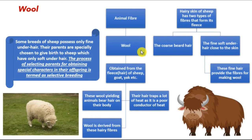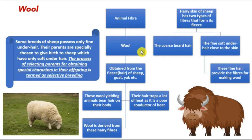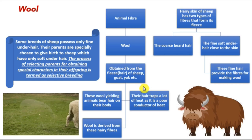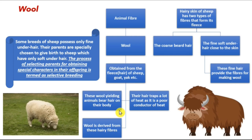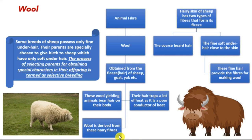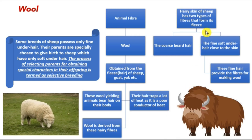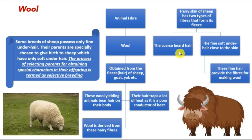Now let's begin with animal fiber: wool. Wool is obtained from the fleece or hair of sheep, goat, yak, etc. These wool-yielding animals bear hair on their body and wool is derived from these hairy fibers. Their hair traps a lot of heat as it is a poor conductor of heat, and this enables them to stay in cold conditions.